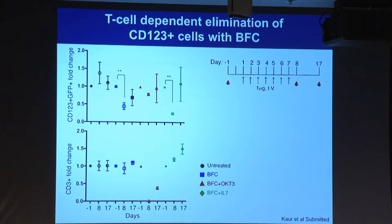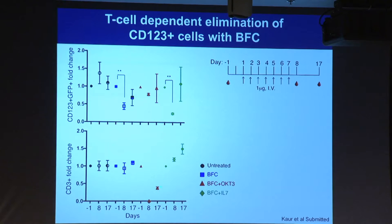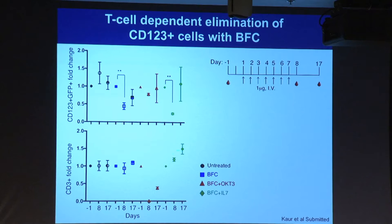We tested whether this is a T cell-dependent process by using OKT3 to deplete human T cells. After depletion, we did not see the therapeutic effect on leukemia stem cells at day 8, and by day 17 T cell levels began to increase while tumor burden remained the same—indicating the effect depends on the presence of T cells. We also used IL-17 to boost T cell levels and function, which resulted in enormous decreases in leukemia stem cell levels with corresponding increases in T cells.